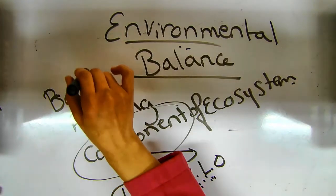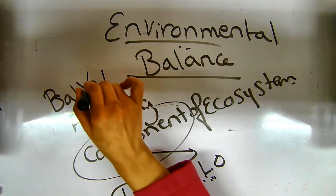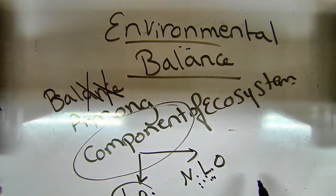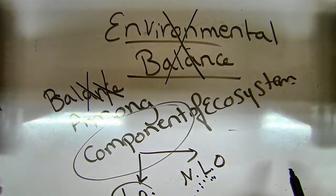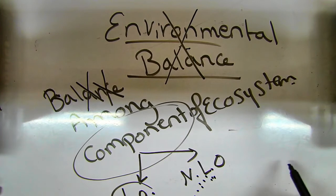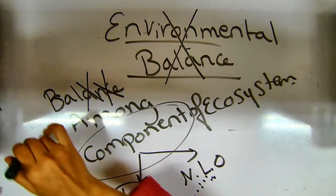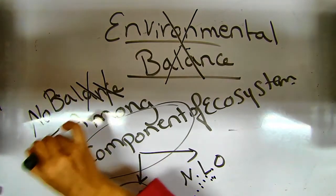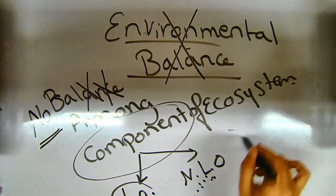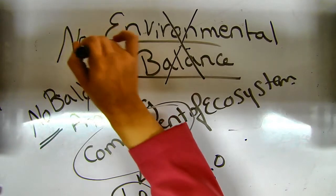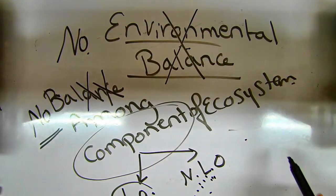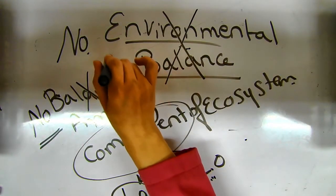Without balance — if there is no balance among these components, which are living organisms and non-living organisms — there will be no environmental balance. If there is no balance among the components of the ecosystem, which are living and non-living organisms, there is no environmental balance, or in other words, there is environmental imbalance.